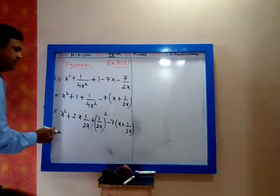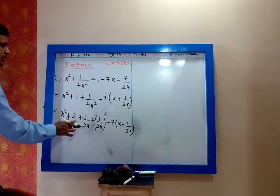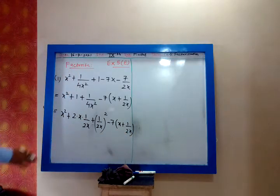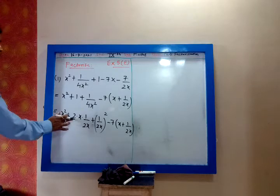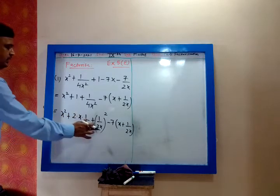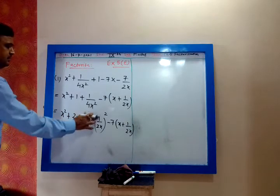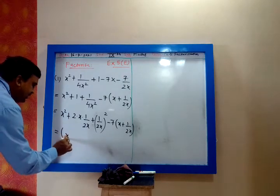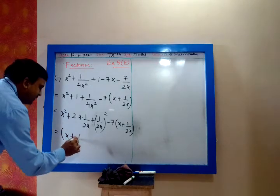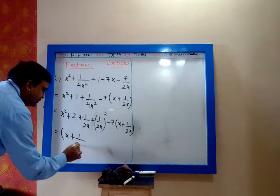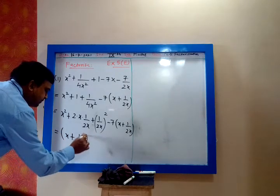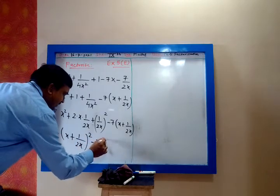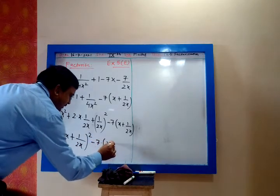The first three terms are of the type a² + 2ab + b², which equals (a + b)². So that will be (x + 1/(2x))² minus 7·(x + 1/(2x)).